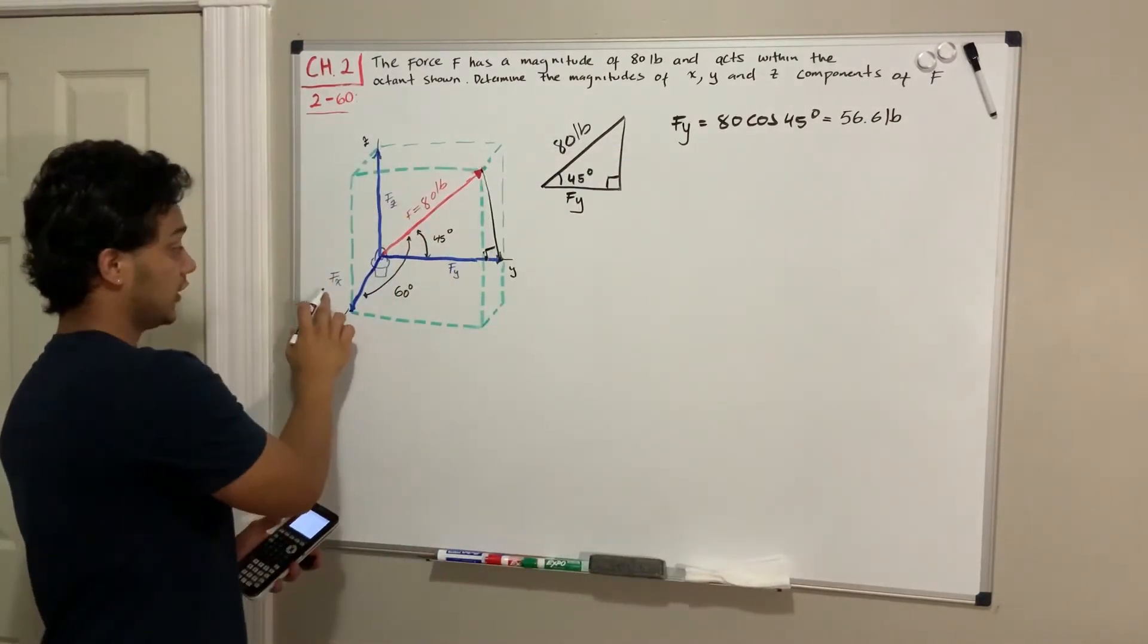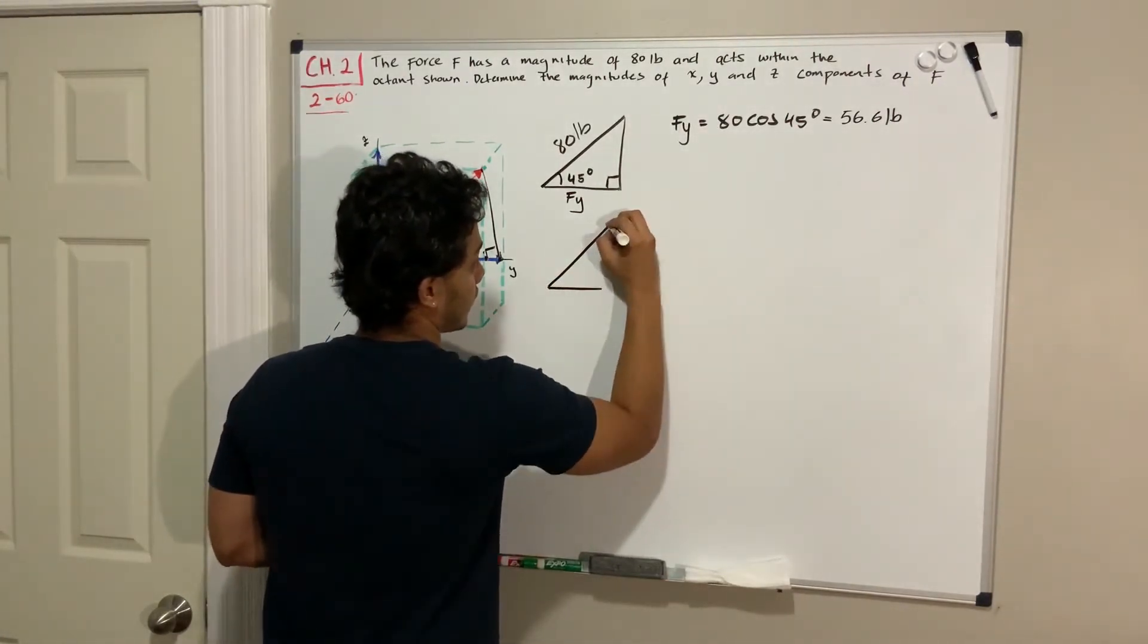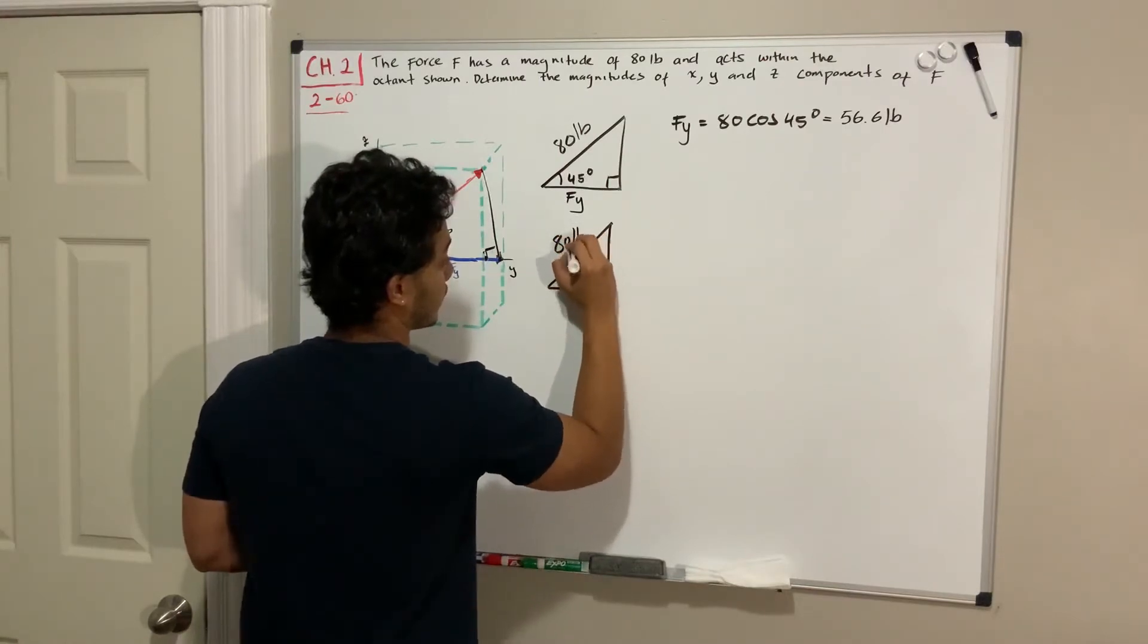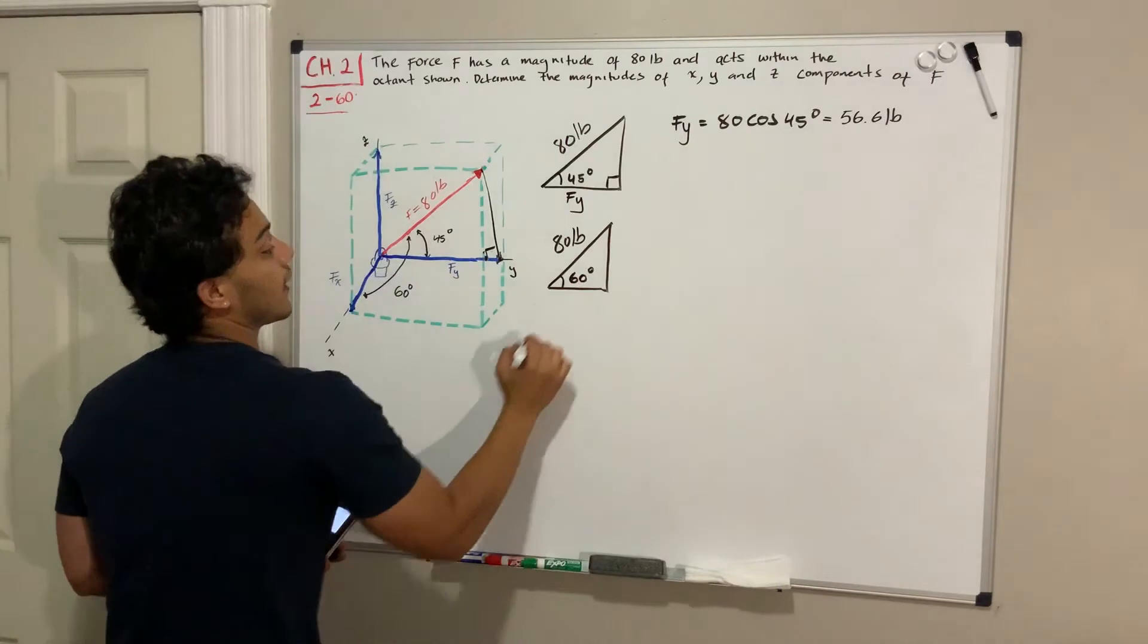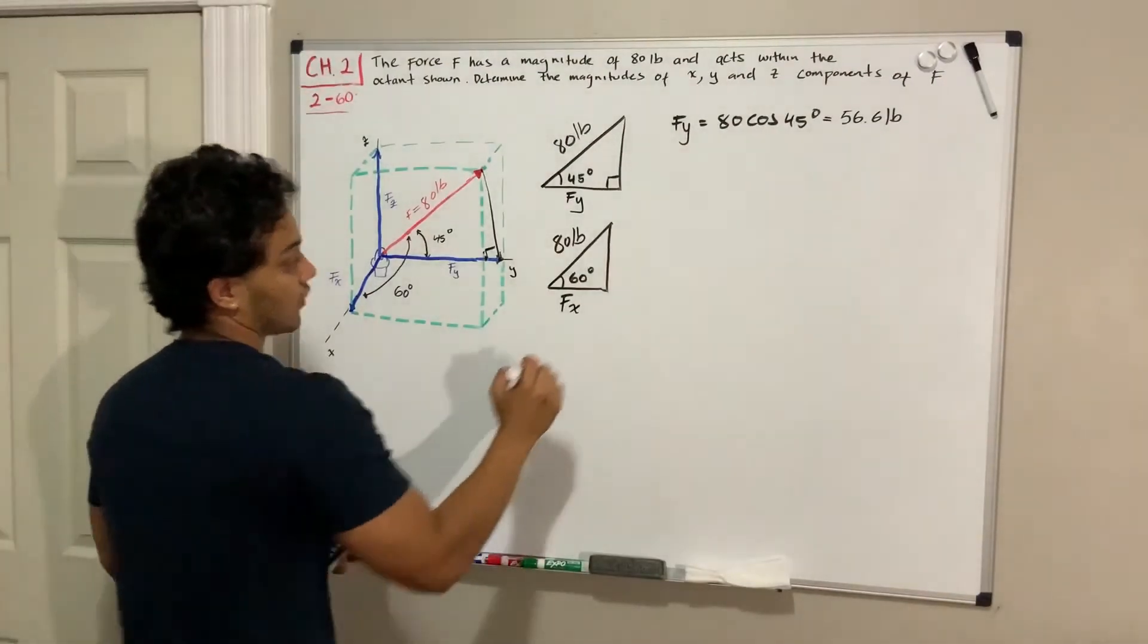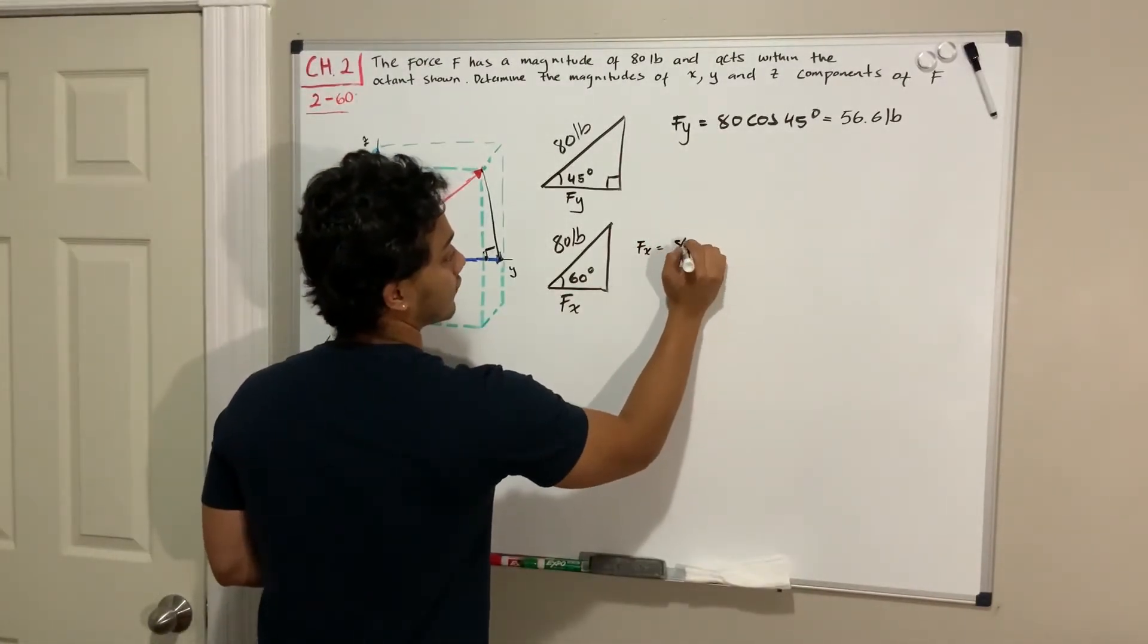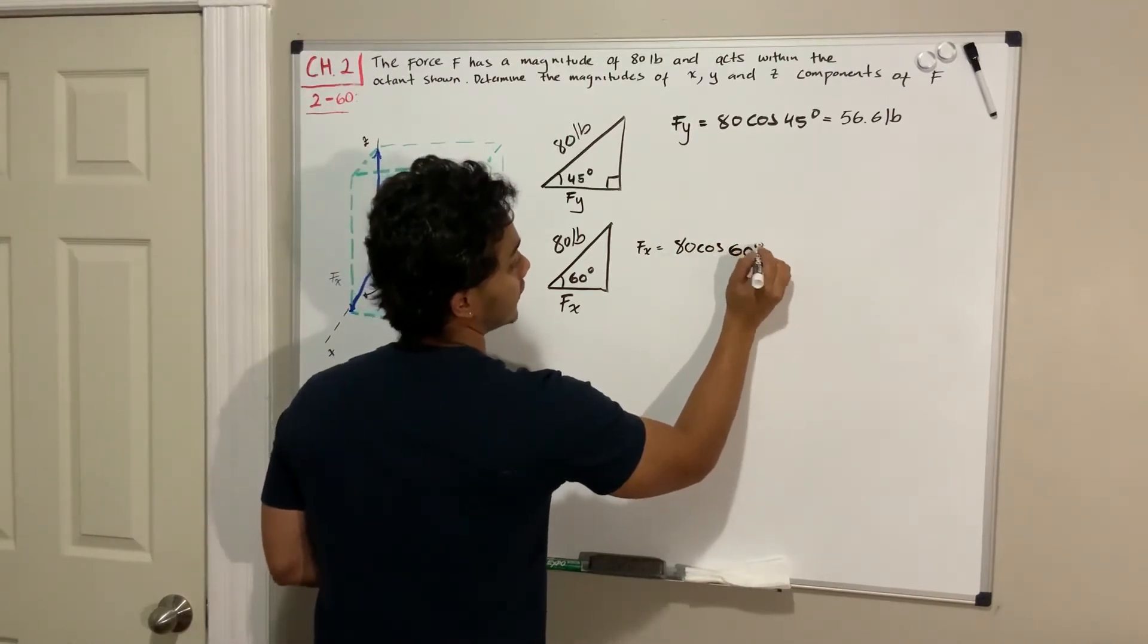Same for the F of X. We're gonna have a right triangle with hypotenuse of 80 pounds, an angle of 60 degrees, and F of X is going to be its adjacent. So F of X is going to be equal to 80 cosine of 60 degrees.